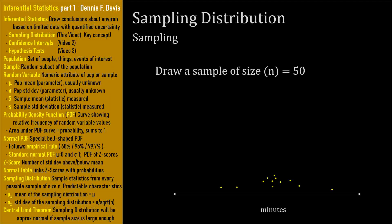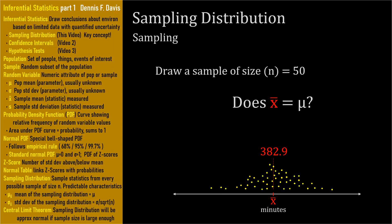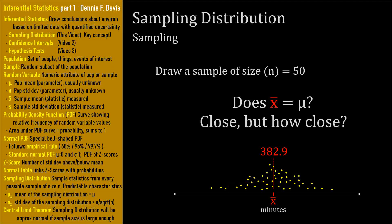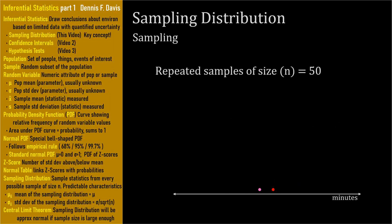Suppose we took a random sample of 50 batteries, tested them, and found the mean life to be 382.9 minutes. The sample mean x-bar is a good, unbiased estimator of the population mean mu. Do you think x-bar is exactly equal to mu? There's clearly variation between batteries, and by choosing 50 different batteries we'd probably get a different value for x-bar. So we'd expect x-bar to be close to mu, but how close? Suppose we took another sample of size 50 from the population and plotted its mean, then another, then another.